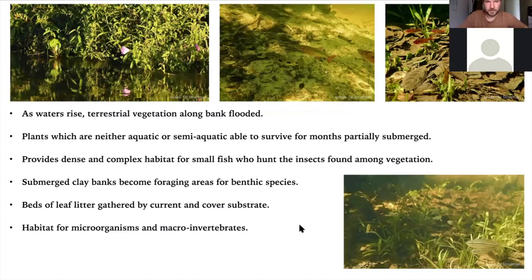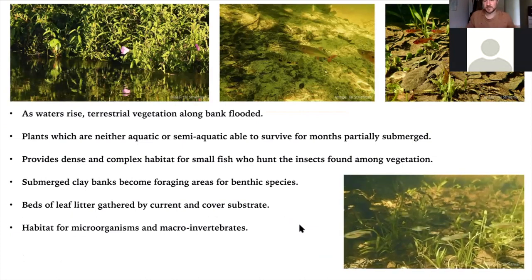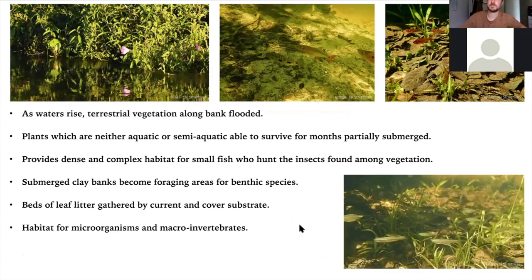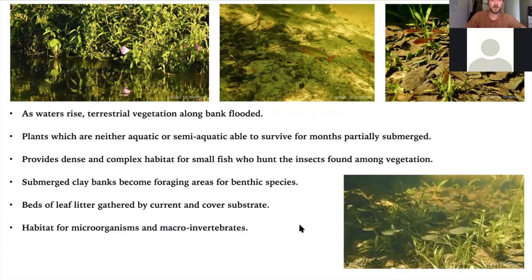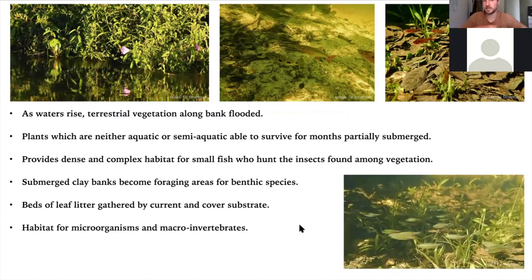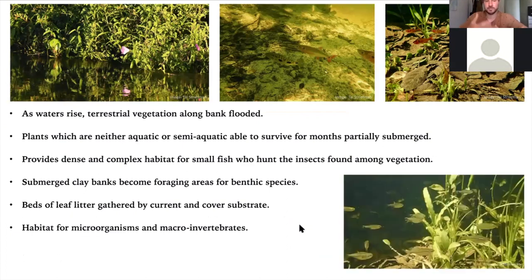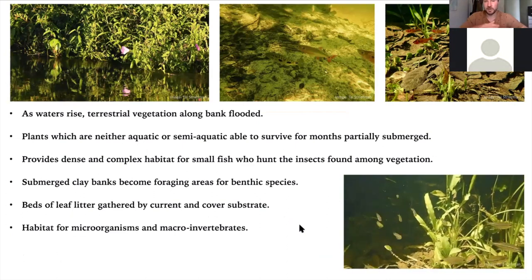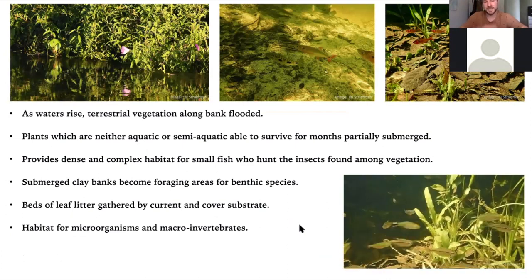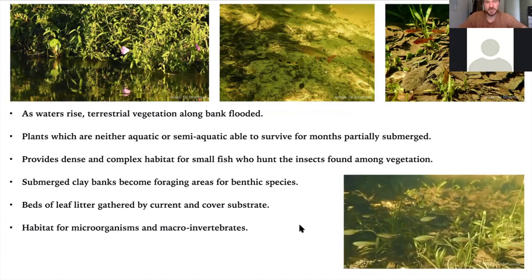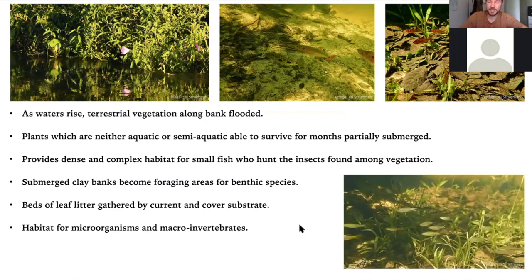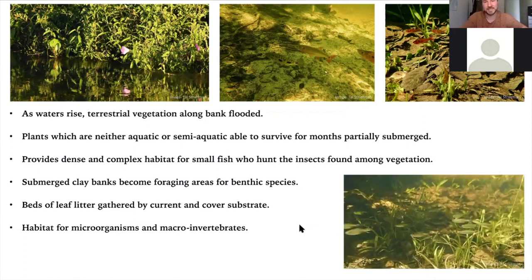Along the river edges, terrestrial vegetation becomes flooded and is lifted by rising water, creating a completely new world of habitat underneath the plants. Along the bank, areas of dense vegetation alternate with exposed clay, leaf litter, and branches. In gullies, quite deep beds of leaf litter form, and that decaying organic material sustains lots of macro invertebrates, which in turn sustain many small fish, which feed the larger fish — a classic food chain.